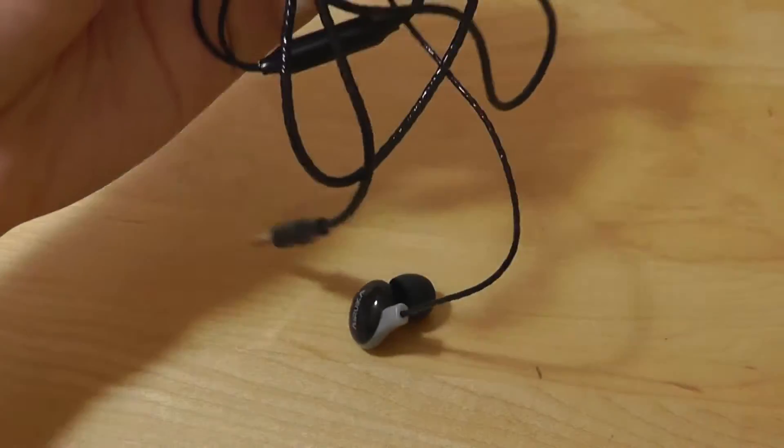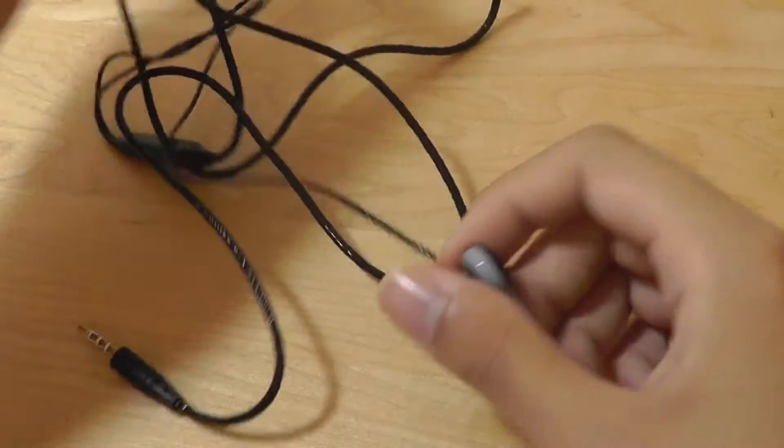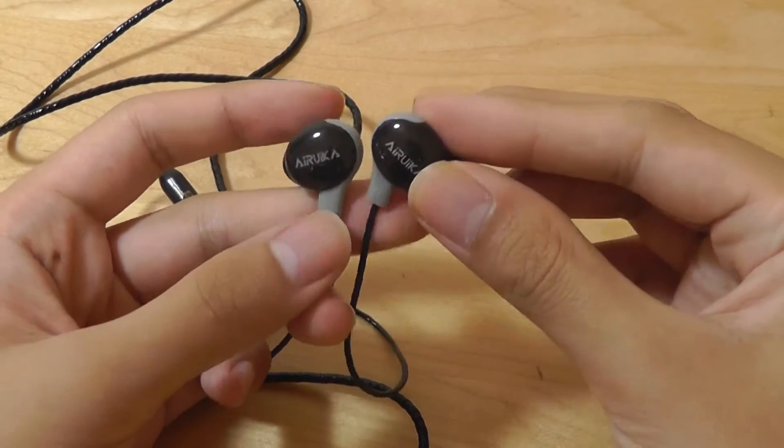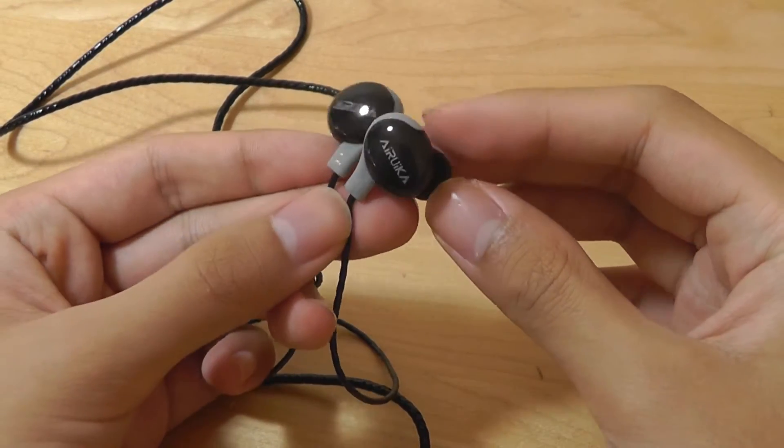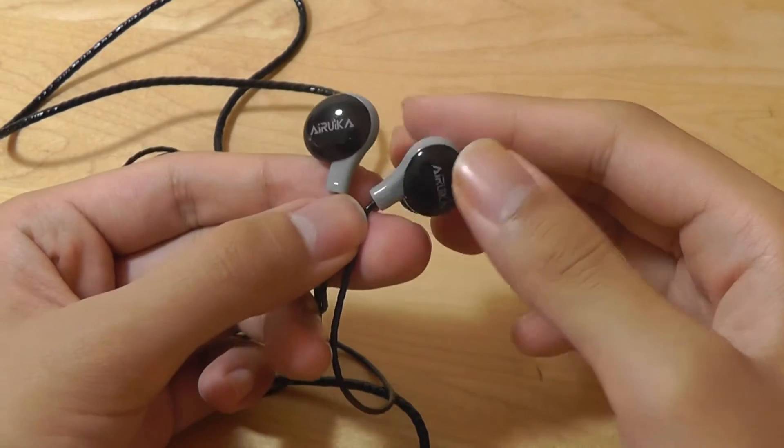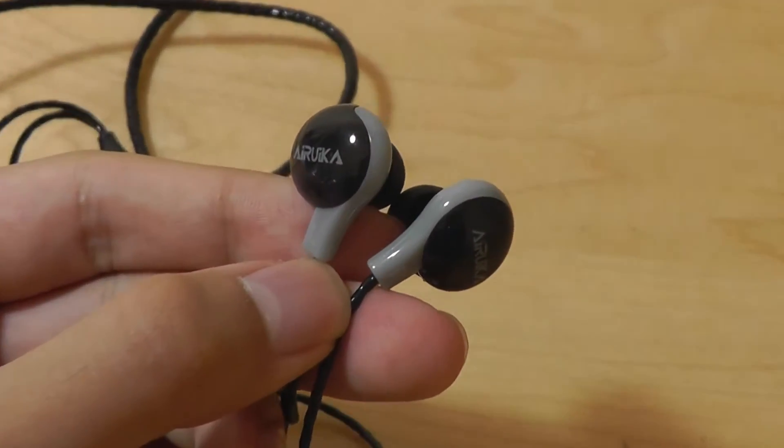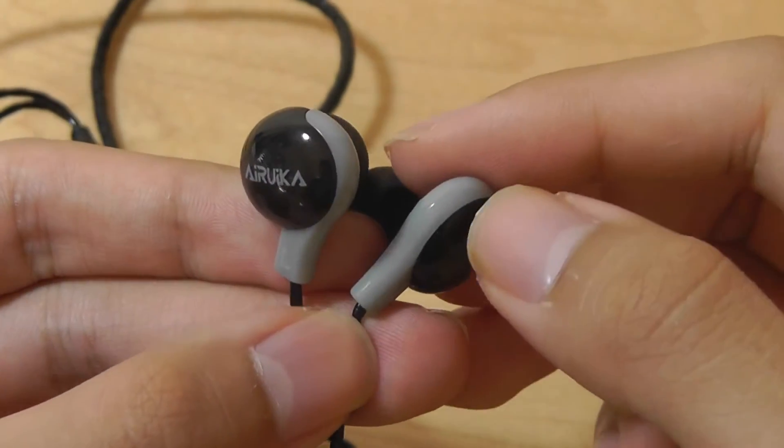This is what the earphones look like. They remind me of in-ear style monitors more than traditional earphones. With that being said, the construction here feels a little bit on the cheap side. They are made entirely out of plastic. I'm not a huge fan of the two-color design.